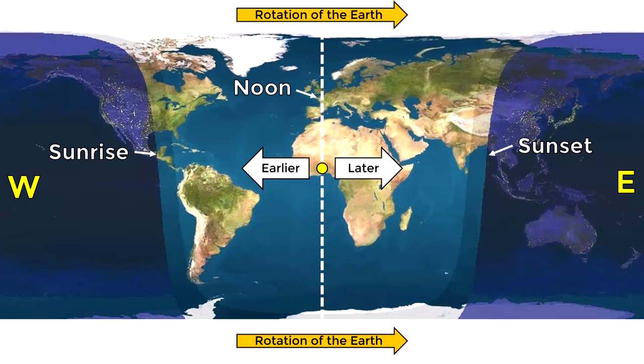The question is: how early or how late is it at a certain point on the Earth with respect to our position? It is possible to calculate how different the solar time is between two points by knowing their longitude.